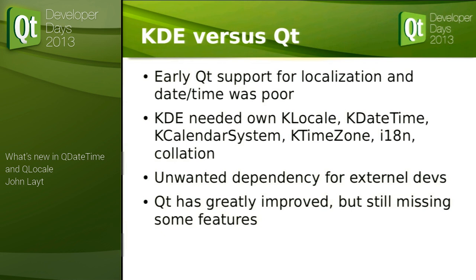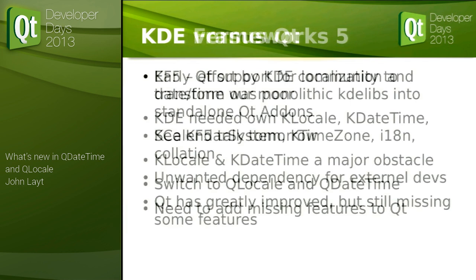The problem with all this is it creates a massive and unnecessary dependency for any external developers. In the past, people have forked our PIM libraries to use in their own PIM apps simply because they didn't want to pull in KLocale and all the other extra weight. Qt has greatly improved though — it's still got a few features missing, but it is considerably better in Qt 5.